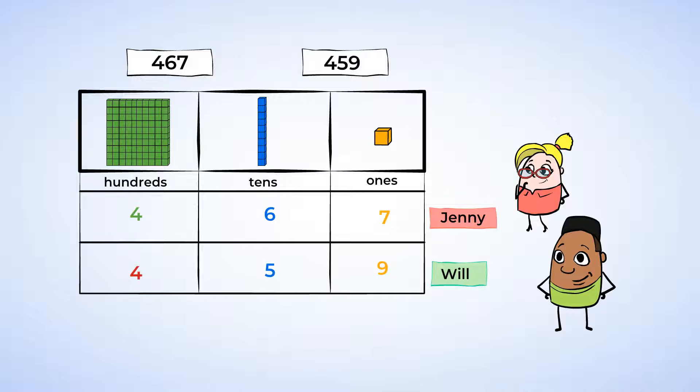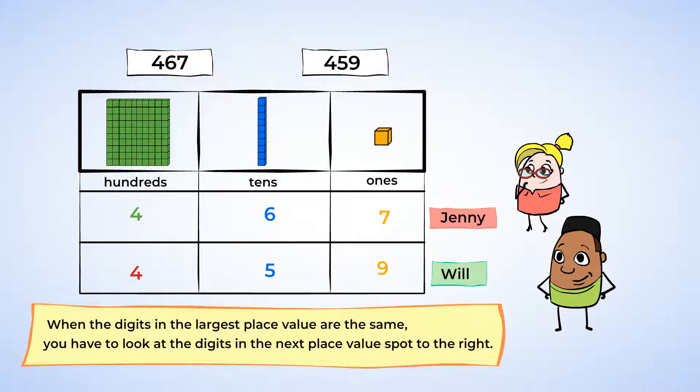Jenny has a 4 in the hundreds place, and wait, so does Will. They both have 4s in the hundreds place. When the digits in the largest place value are the same, you have to look at the digits in the next place value spot to the right. So we need to look at the tens place next. Jenny has a 6 in the tens place, and Will has a 5 in the tens place. 6 is bigger than 5, so this means that 467 is greater than 459.